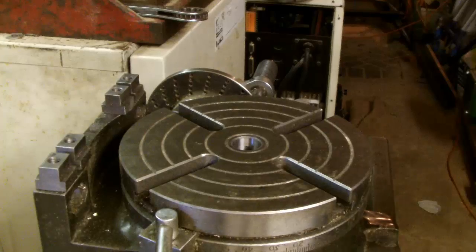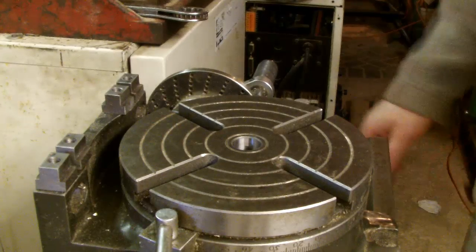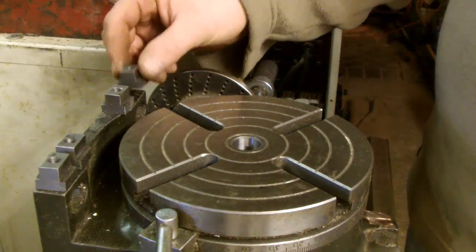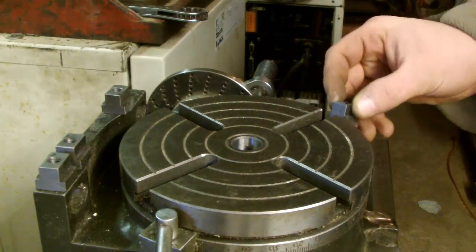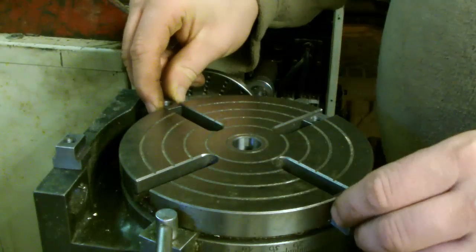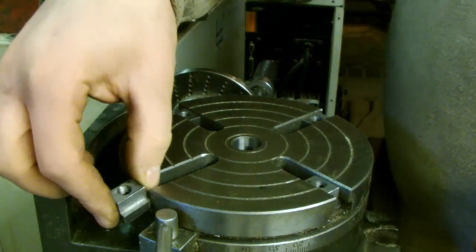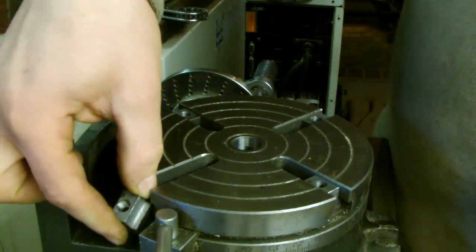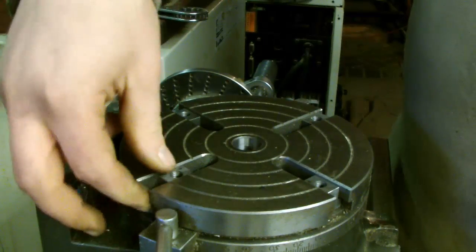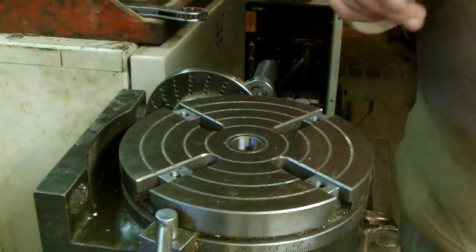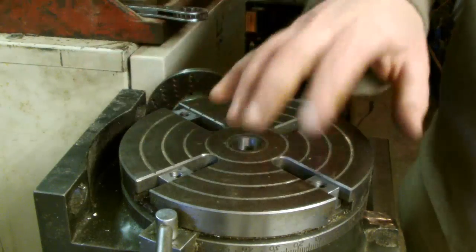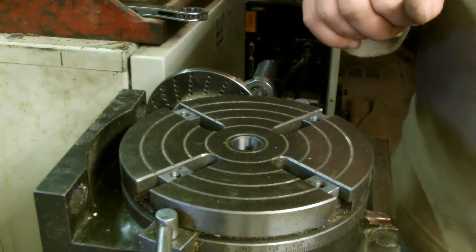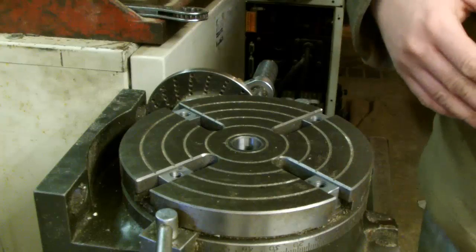Well, we're over at the rotary table. As you can see, these little T-nuts fit in there quite nicely. I've been meaning to make those for a number of years. I've had this for quite a while, so now we can hopefully do a lot more jobs. They are M8 threaded and should do a good job of holding down quite large workpieces.